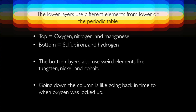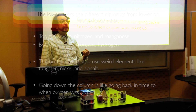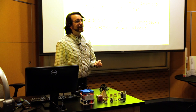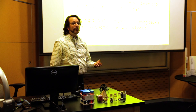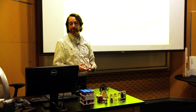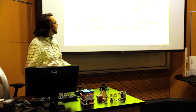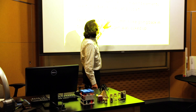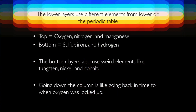If you look closer at the lower layers, you see a lot of weirdness to them. On the top, you see oxygen, nitrogen, and manganese being used. But at the bottom, you see sulfur, iron, and hydrogen being used much more. If you enter a sulfurous environment, your inclination is to leave, right? Because sulfur doesn't smell good — you don't belong in that world anymore. The bottom layers also use weird elements that we very rarely even mention in biochemistry: tungsten, nickel, and cobalt.